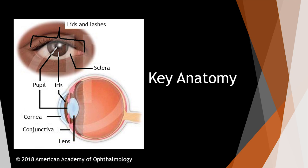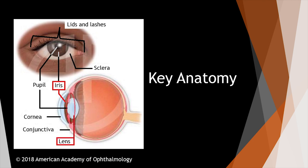In the area between the cornea and the iris, that area is called the anterior chamber, and the area between the iris and the lens is called the posterior chamber.